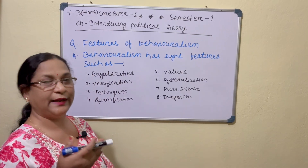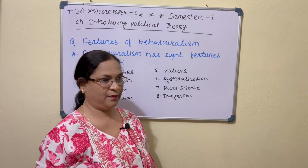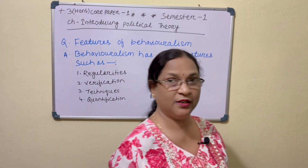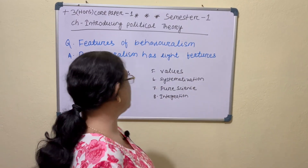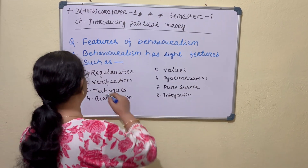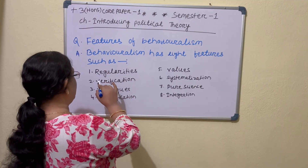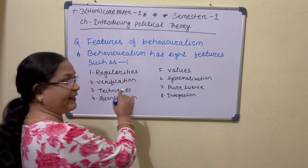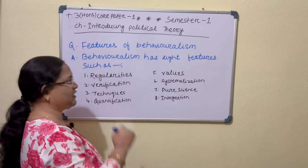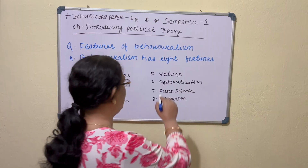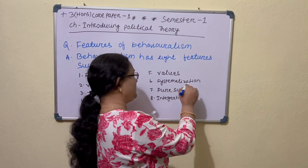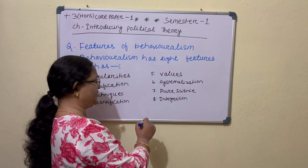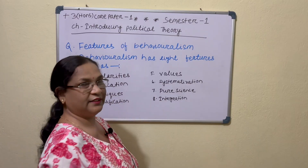According to David Easton, Behaviorism has remarkable features such as Regularities, Verification, Techniques, Quantification, Values, Systematization, Pure Science, and Integration.